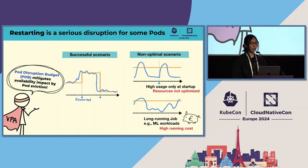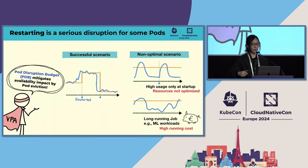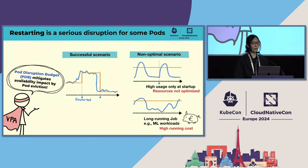Let's dive into Recreate mode a bit more. The blue line shows resource usage while the orange line shows the recommended values. Recreate mode can be well-optimized for many applications. Of course, pods will be disrupted by eviction to apply a new recommendation, but Pod Disruption Budget (PDB) can mitigate the impact on service availability. PDB can limit how many pods are disrupted at the same time. Therefore, the combination of Recreate mode and PDB allows resource optimization without sacrificing service availability.